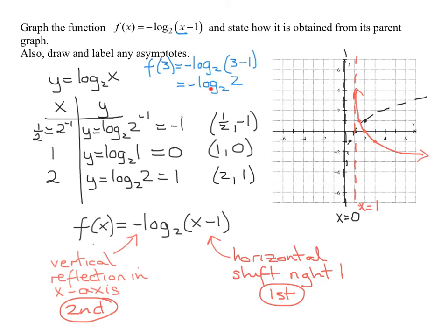Now remember, what's log to the base 2 of 2? That's 1. So this is going to give you negative 1. So that means my checkpoint is 3, negative 1. Going back to my graph, when x equals 3, was y equal negative 1? Yes.